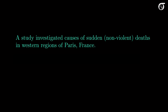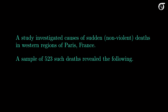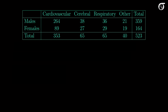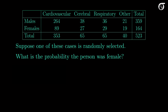A study investigated causes of sudden deaths in western regions of Paris, France — non-violent deaths that occurred within 24 hours of the onset of symptoms. A sample of 523 such deaths was analyzed. In this table, 264 of the cases involved males dying from a cardiovascular cause, 27 involved females dying from a cerebral cause, and so on. If one of these cases is randomly selected, the probability the person was female is simply 164 over 523, or approximately 0.31.